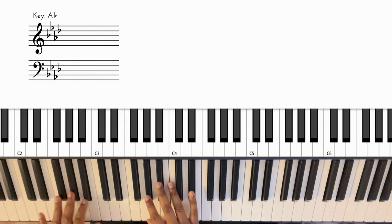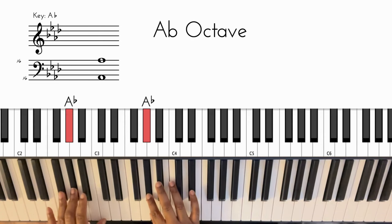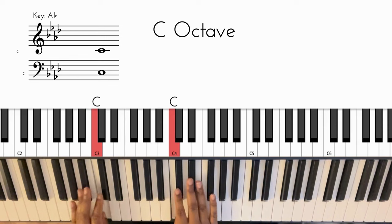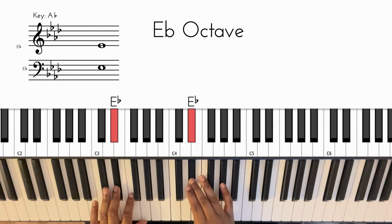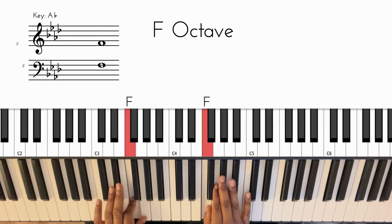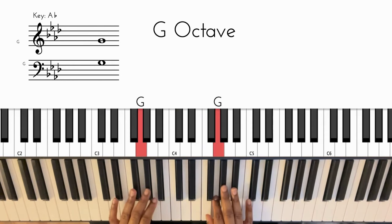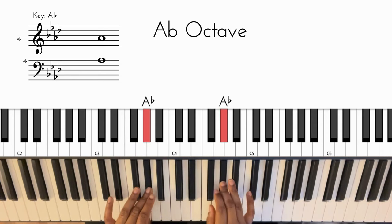Today we're going to be in A flat, the church key. So let's go over the scale real quick. We have A flat is the one, B flat is the two, C is the three, C sharp or D flat is the four.